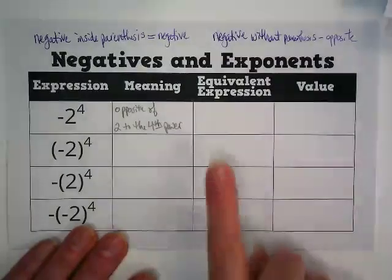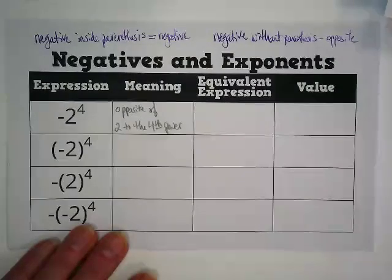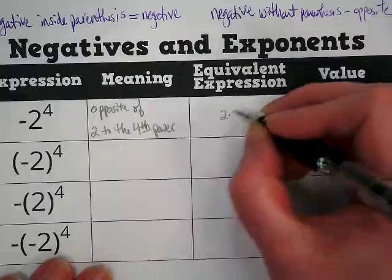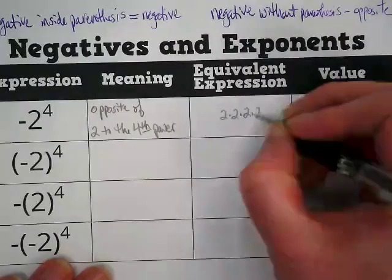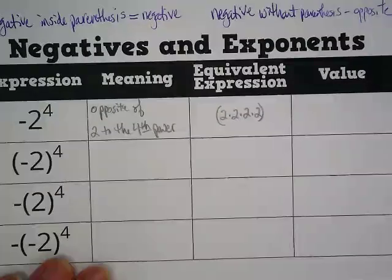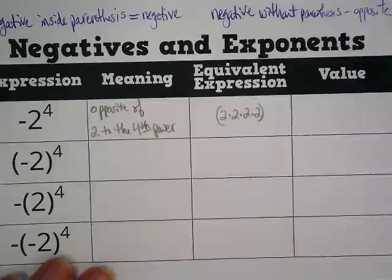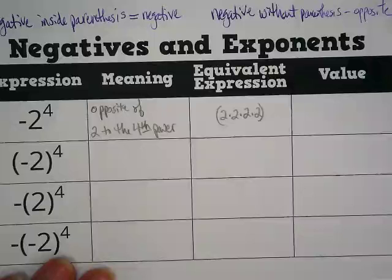So the first thing I'm going to write in our equivalent expression here, I'm going to write 2 to the 4th power, which would be 2 times 2 times 2 times 2. I'm going to put those in parentheses because we're going to be talking about order of operations in a minute. And things inside parentheses get done first, yes?